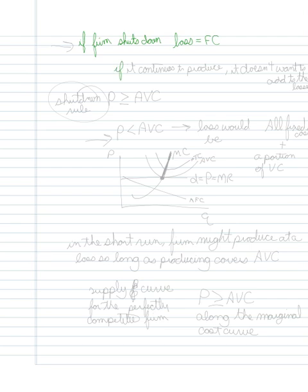If it continues to produce, it doesn't want to add to the losses, meaning that it wants to avoid a situation where producing allows the loss to be greater than the fixed cost, because then it would be better off just to shut down. So the firm wants to be able to charge a price that's greater than or equal to the firm's average variable cost.